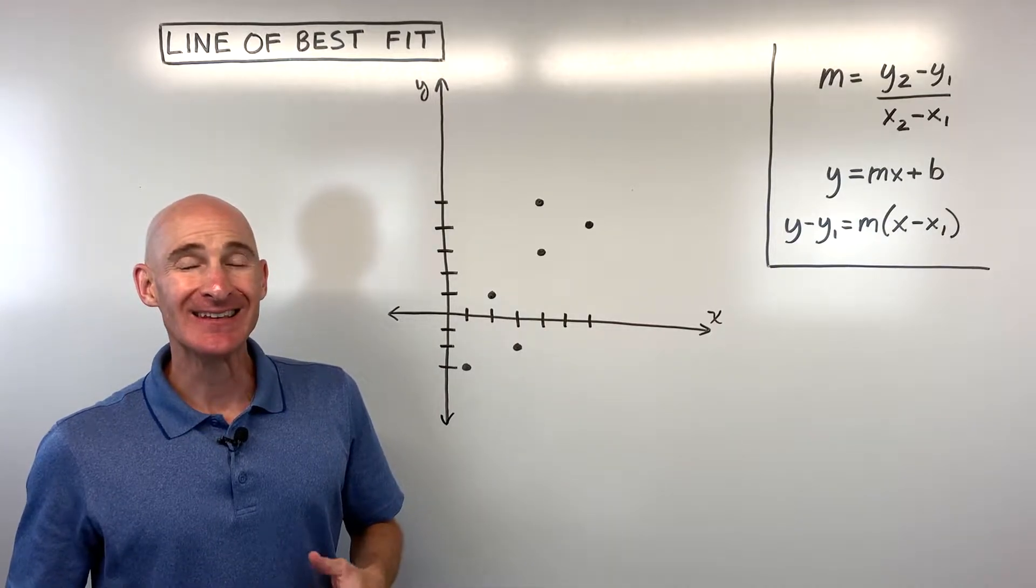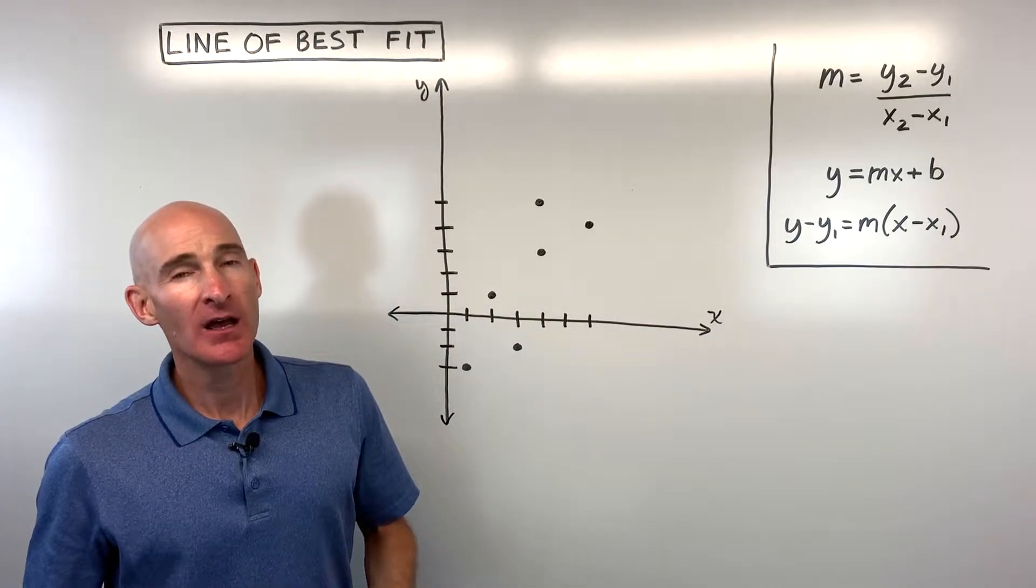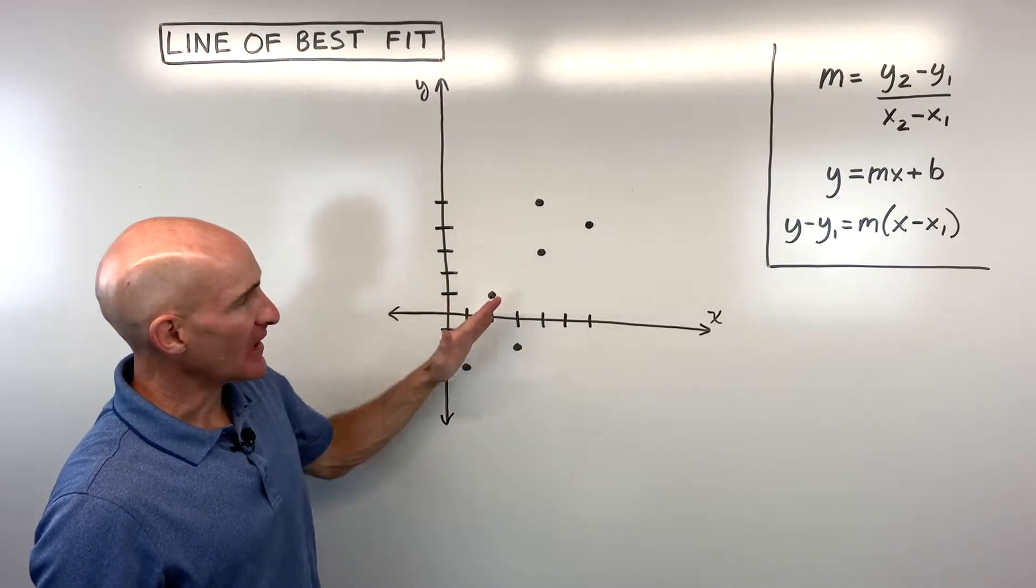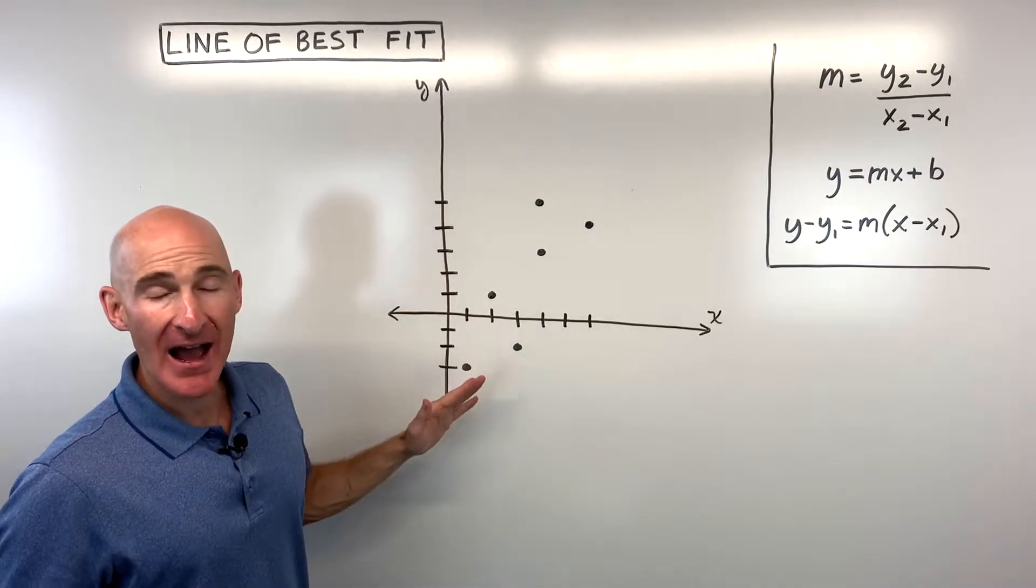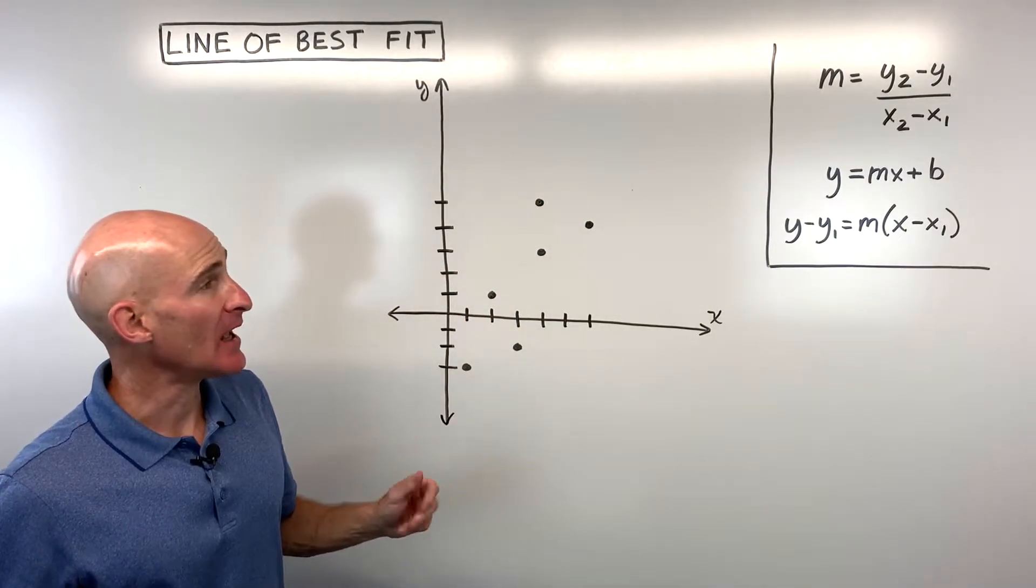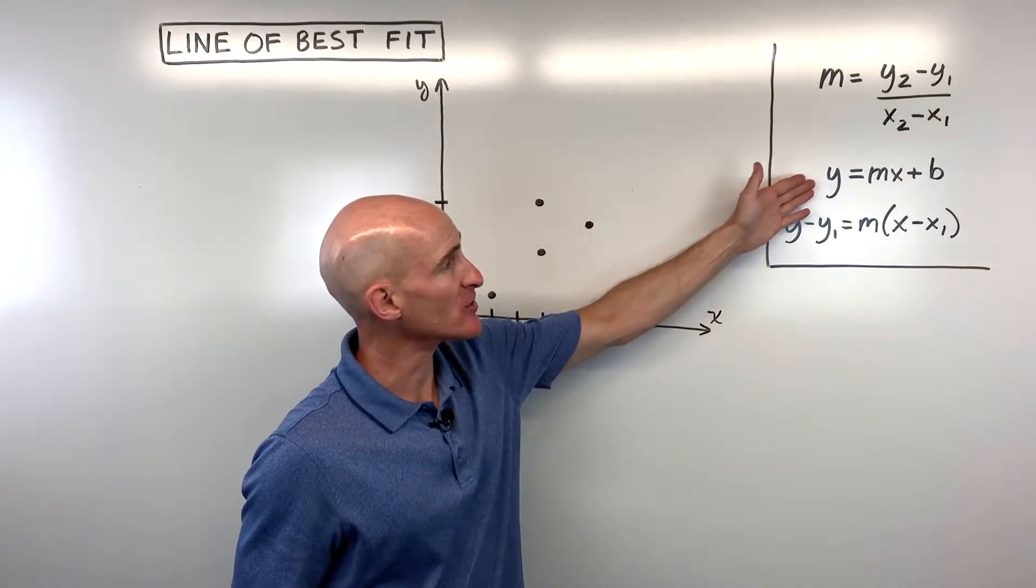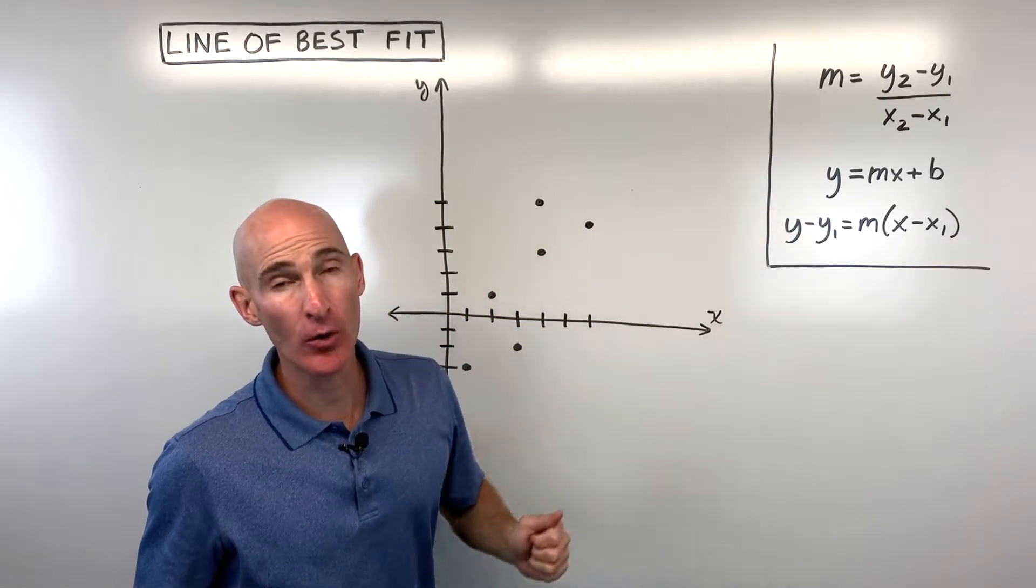In this video, you're going to learn how to find the line of best fit by estimating using two points on that line of best fit, and then we're going to write the equation using our slope and either the slope-intercept form or the point-slope form.